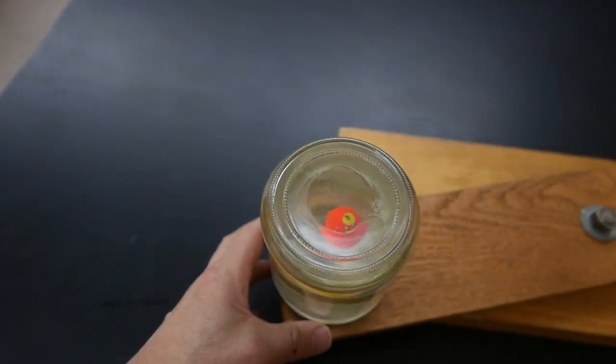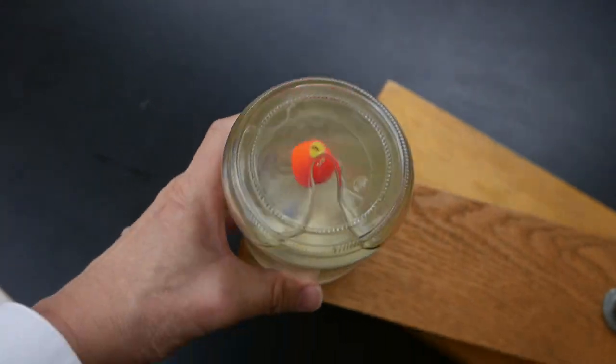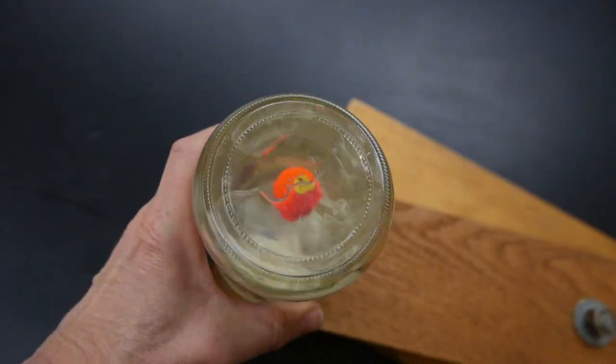This piece starts with two bottles that are filled with water. There's a bobber inside that's tied to the bottom, right in the center of the jar.